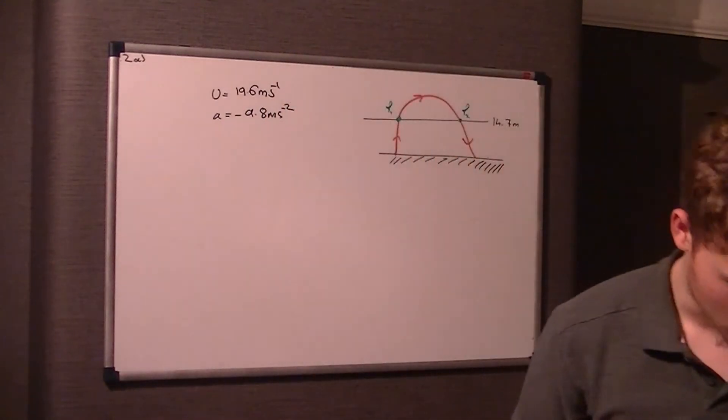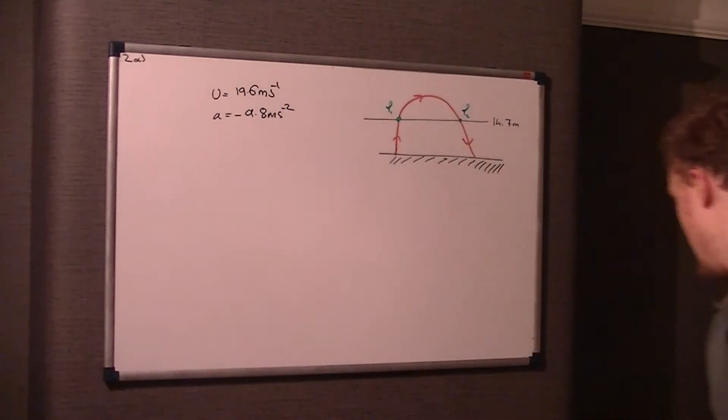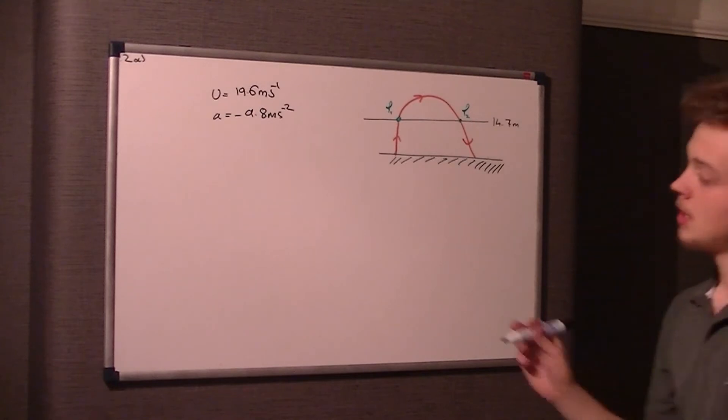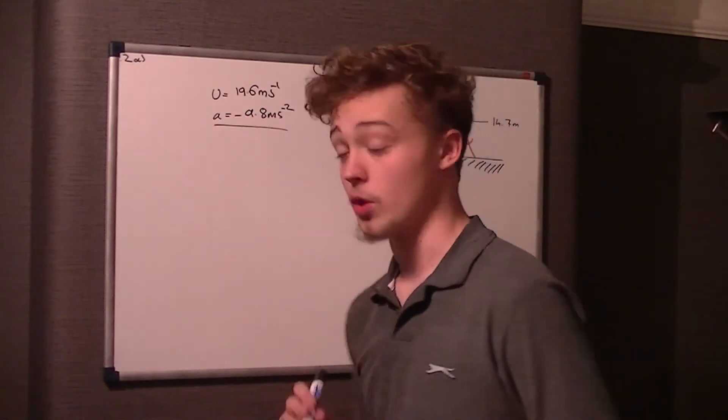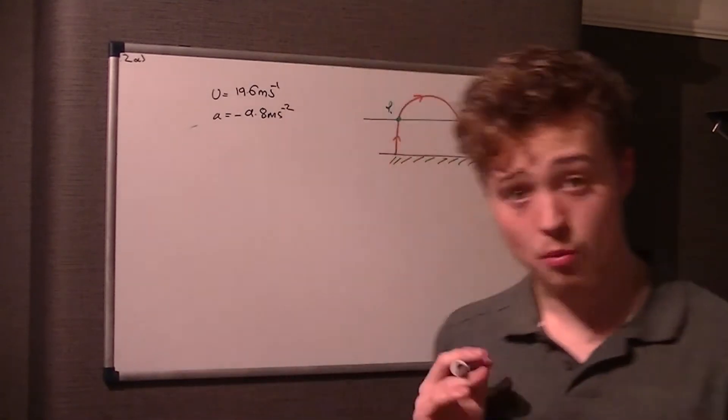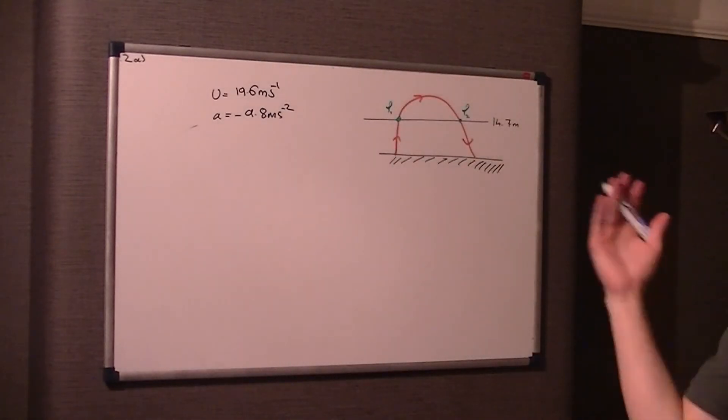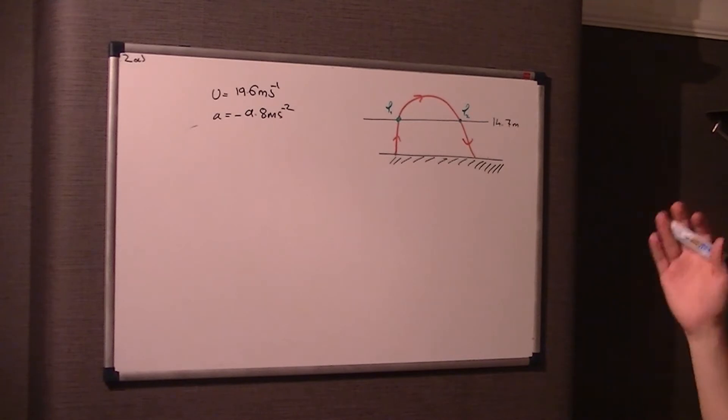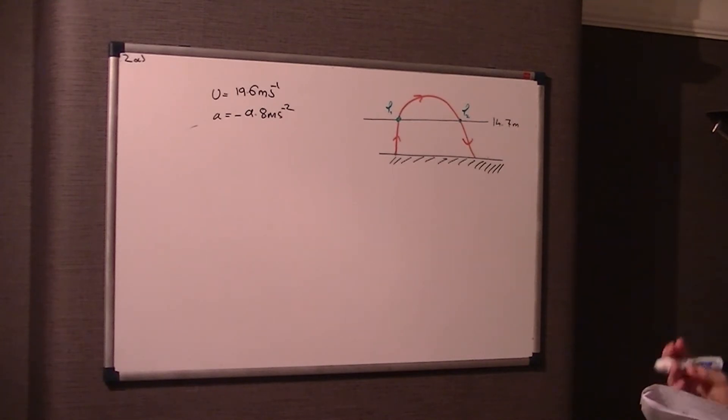Just a side note really, if you are genuinely interested in how is it 9.8 meters per second squared, have a look at my A2 physics videos and there should be a bit on there that actually explains how we get 9.8. You can get it more accurate than that, but for M1, that's all you need to know.